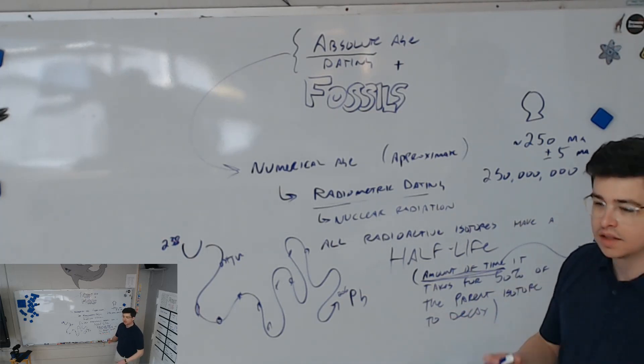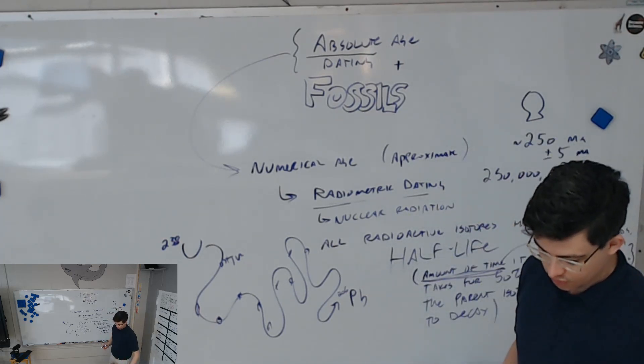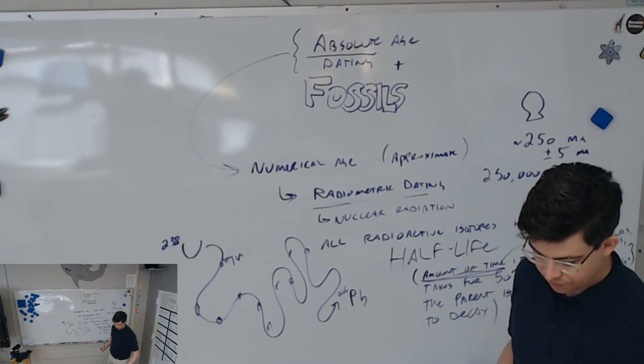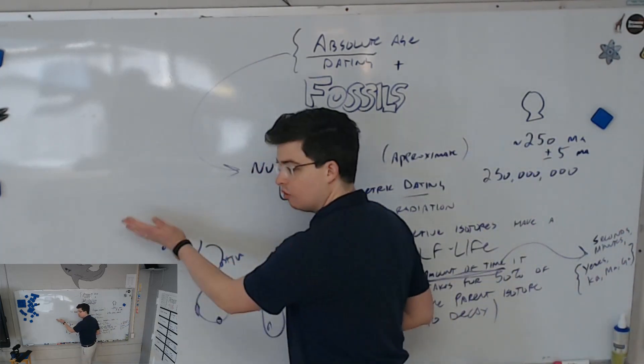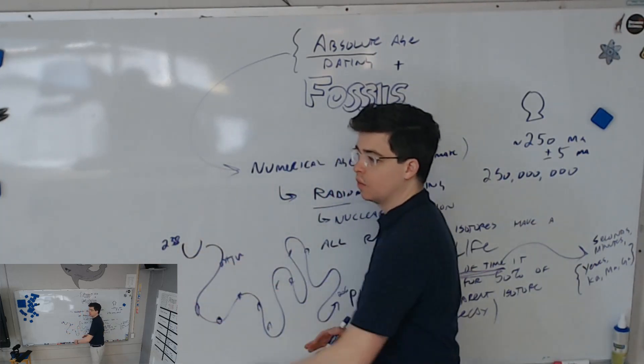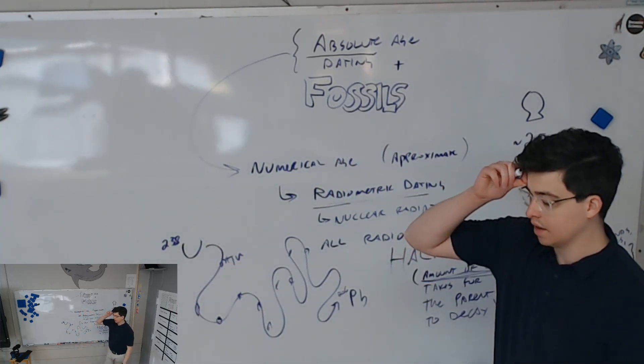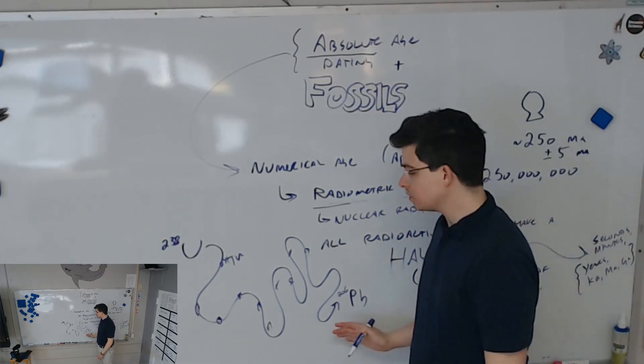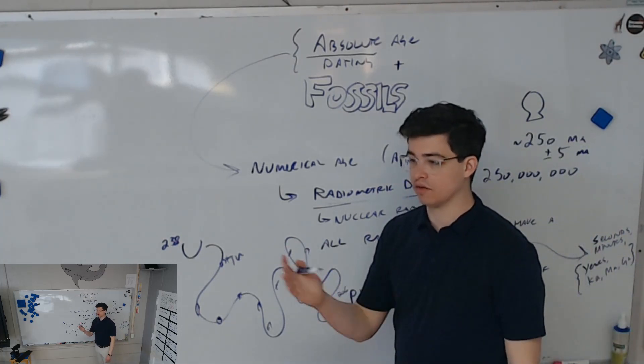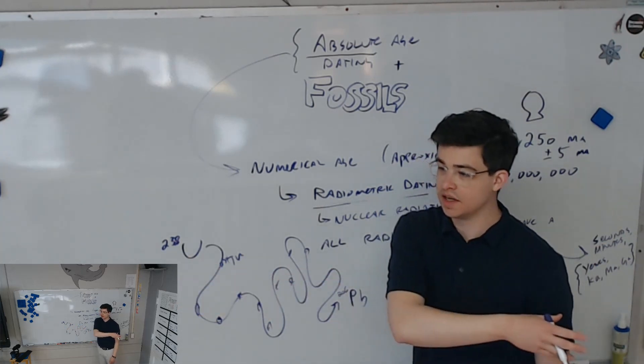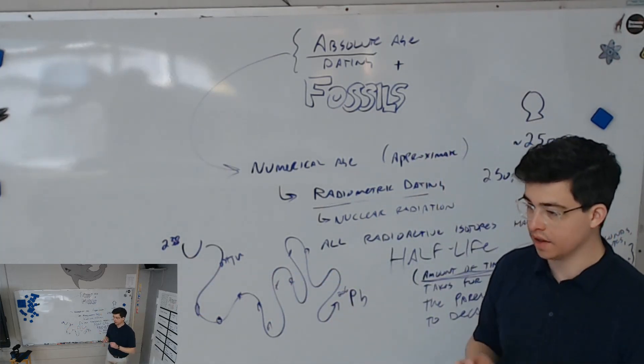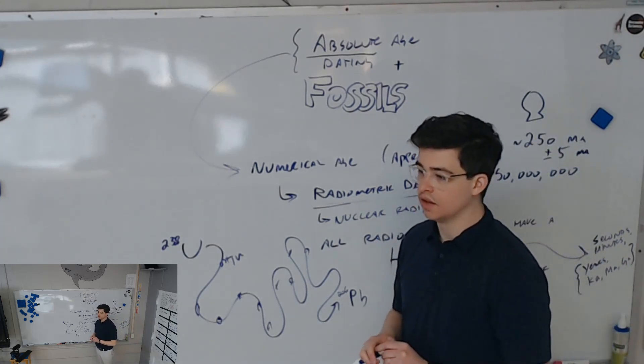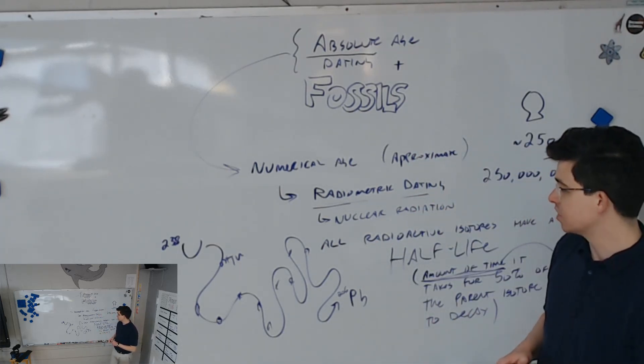Look at a rock or a fossil and we see, oh, this is about 50% uranium-238 and about 50% lead-206. We already have determined how much time it takes for that to occur, and so we can say that this rock is that many years old, however long one half-life is. Does that make sense?